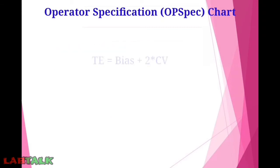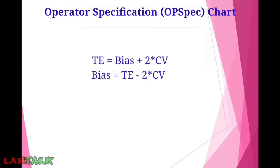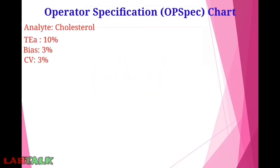Before plotting, we need some formulas. First: total allowable error = bias + 2 × CV%. Rearranging, bias = total allowable error − 2 × CV%. And CV% = (total allowable error − bias) / 2. These three formulas will be used in plotting the operator specification chart.